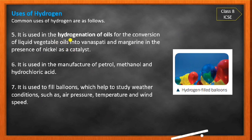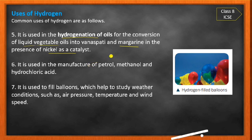Fifth, hydrogen is used in the hydrogenation of oil. In the formation of liquid vegetable oils and margarine such as palm oil and vanaspati oil, hydrogen is used for hydrogenation in the presence of nickel as a catalyst.